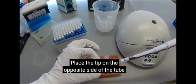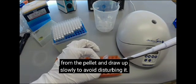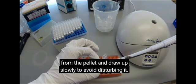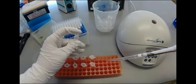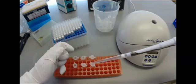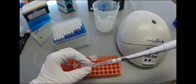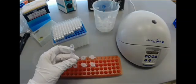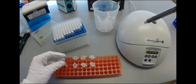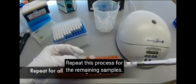Place the tip on the opposite side of the tube from the pellet and draw up slowly to avoid disturbing it. Repeat this process for the remaining samples.